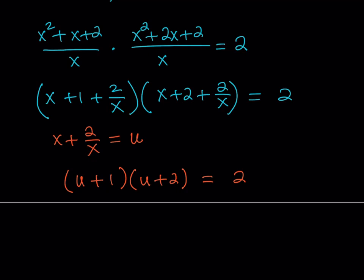Now at this point you might be thinking okay I can find the solutions. Let's just distribute and use the quadratic. u squared plus 3u plus 2 equals 2. That's amazing because even the constants cancel out. This is like super simple.